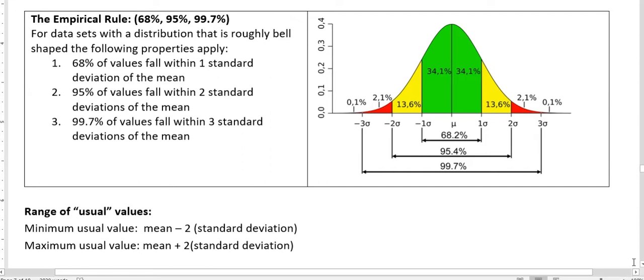We would say that 68 percent of all the values in that data set fall within one standard deviation of the mean. So if our mean is in the center, then one standard deviation to the right is 34.1 percent of the data values...